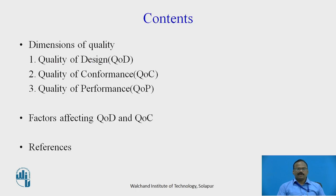Dimensions of Quality. Under that, first is Quality of Design, second is Quality of Conformance, third is Quality of Performance. Then we will discuss Factors Affecting Quality of Design and Quality of Conformance, followed by References.